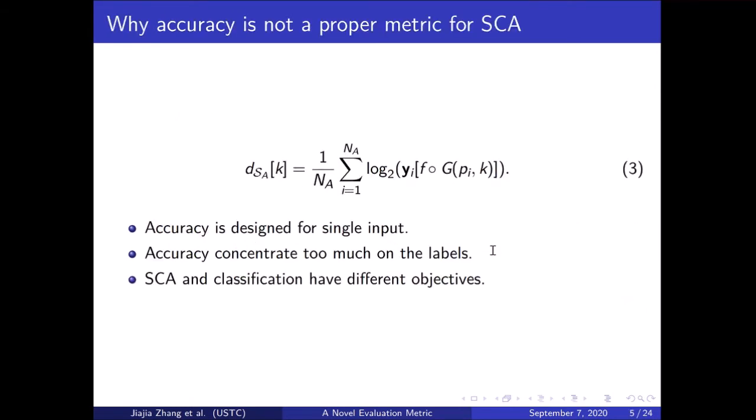This equation shows how to calculate the maximum likelihood score. Here we can see why accuracy is not a good metric for such analysis. Accuracy is designed to show the performance of models on a single prediction. However, in profiling attack, we use the maximum likelihood method where a set of traces related to the same key are given. Accuracy fails to tell the underlying mechanism and concentrates only on the labels. This is also where the objectives of classification and profiling attack have conflicts, because when conducting a profiling attack, we are not trying to find a model giving excellent results on a single input.